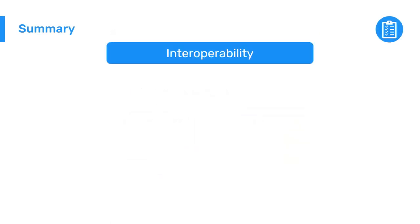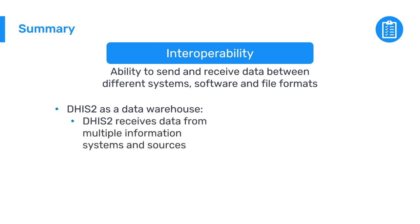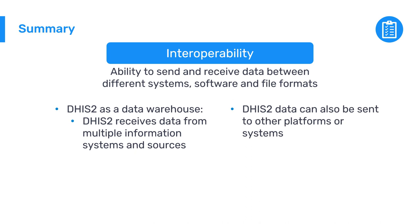In summary, interoperability refers to the ability to send and receive data between different systems, software, and file formats. Using DHIS-2 as a data warehouse is one of the most common DHIS-2 interoperability scenarios — this refers to how DHIS-2 can be used to receive data from multiple information systems and sources to facilitate data triangulation. DHIS-2 data can also be sent to other platforms or systems that need it.